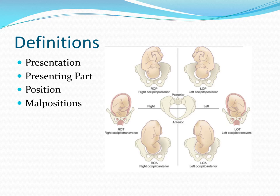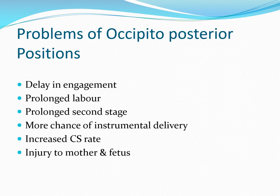Even though it is a vertex presenting part, just because of the position of the occiput it will create problems — that is why it is called a malposition. Today we will be dealing with malpresentations, malpositions, and abnormal lie, excluding breech. When the occiput occupies the posterior quadrants of the pelvis, we call it an occipito-posterior position, considered a malposition. Because of the lateral rotation of the uterus and the position of the sigmoid colon on the left, right occipito-posterior is more common than left occipito-posterior.